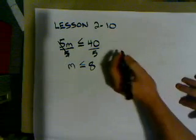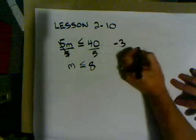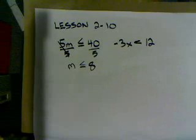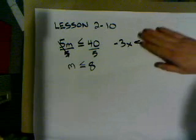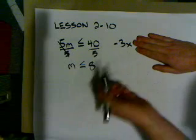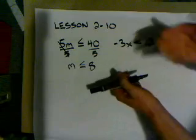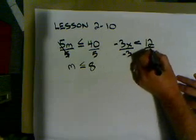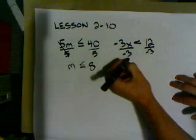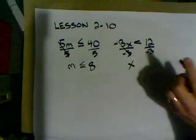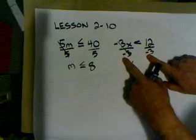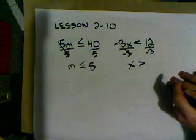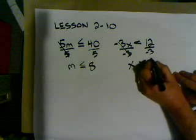Now, a little monkey wrench, but we can handle it. Let's say we have something like this: negative 3x is less than 12. Find our variable — there it is. What's hanging out with the x? A negative 3 — 5 times negative 3. How do we get rid of times negative 3? We need to divide by negative 3. So divide by negative 3 on both sides. This is going to cancel out, and we're left with just x.